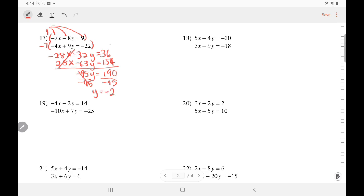Plugging negative 2 into y of the first equation. Negative 7x minus 8. Negative 2 equals 9. Negative 7x plus 16 equals 9. Subtract 16 from both sides. Negative 7x equals negative 7. x equals 1. Present your answer and there it is.